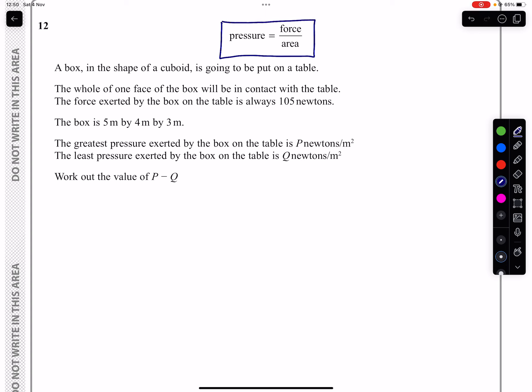We're told that the box in the shape of a cuboid is going to be placed on a table, and we know that only one of those faces will be in contact with the table. So that is however we position the cuboid, the base of it is the only part that's going to be in contact with the table.